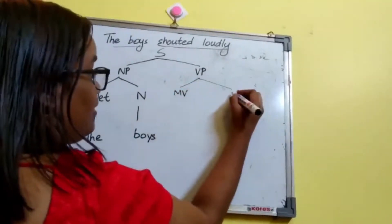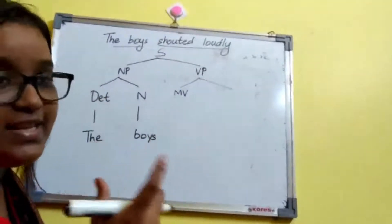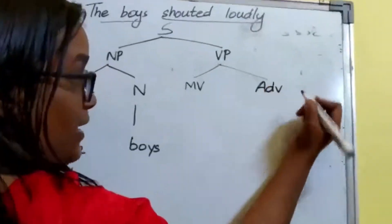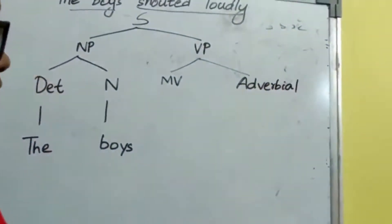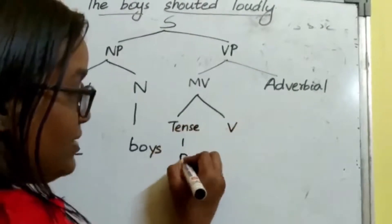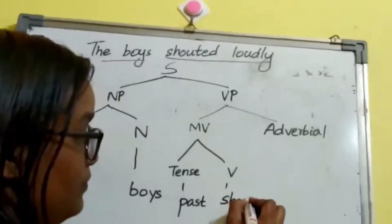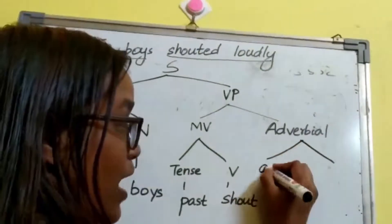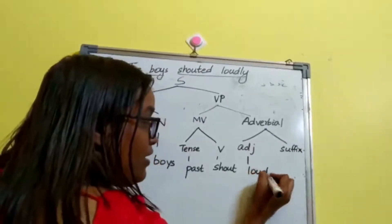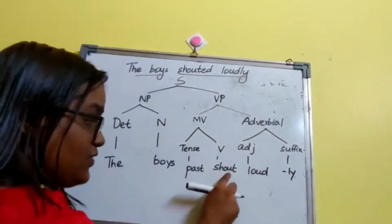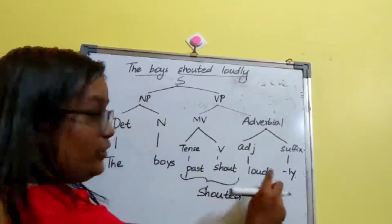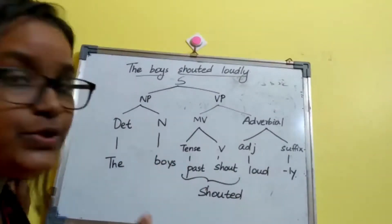VP splits into main verb plus adverbial, because 'loudly' is actually an adverb, so we call it adverbial. The main verb 'shouted' splits into tense plus verb — tense is past tense and verb is 'shout'. The adverbial 'loudly' can be split into adjective and suffix — adjective is 'loud' and suffix is '-ly'. So: 'The boys shouted loudly' — this is a simple example of how to do IC analysis.